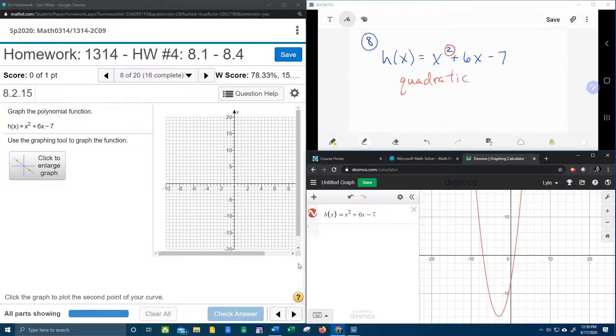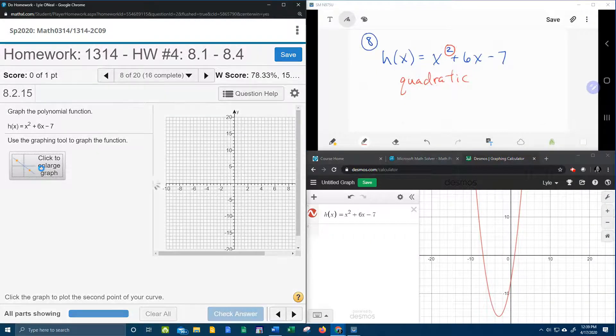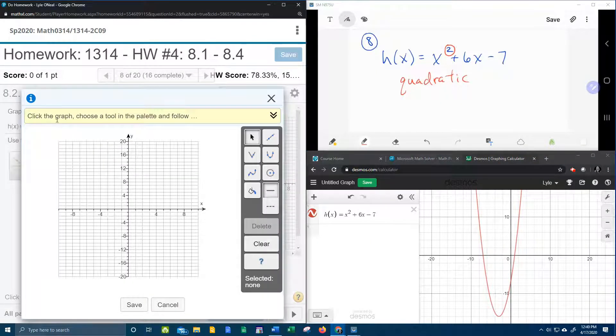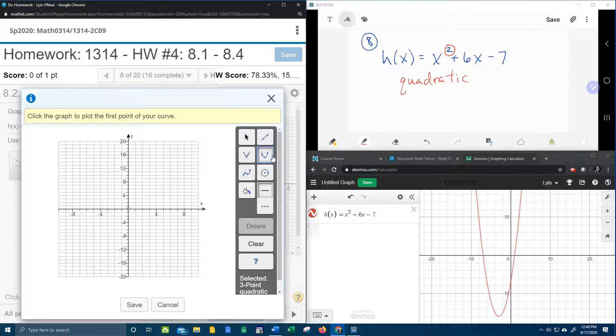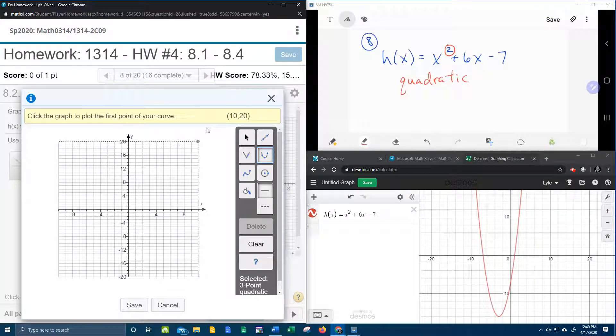So we know that our graph is going to be quadratic, and if I come over here and click to enlarge, it says click the graph, choose a tool in the palette. And so what I want to choose is the three point quadratic tool, and since it's the three point tool, it means I'm going to need three points.